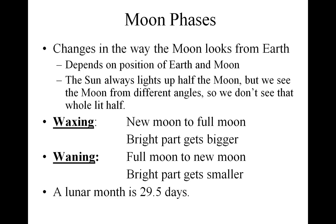Today's lesson is going to be a short lesson on moon phases. We're going to demonstrate this in class so that you could really get a good feel of what's happening and why we see different parts of the moon. Moon phases are just changes in the way that the moon looks from Earth. It's going to depend on the position of the Earth and the moon. The sun is always going to light up half the moon, but we see the moon from different angles so we don't see that whole lit half.